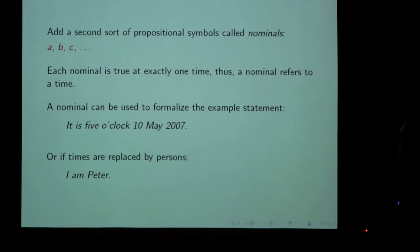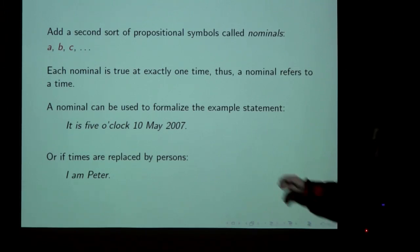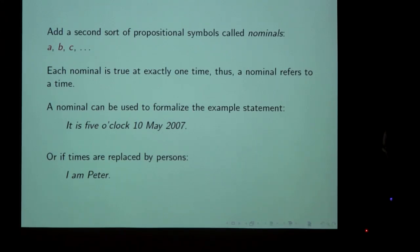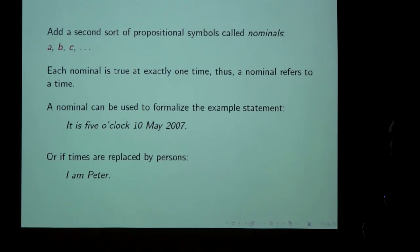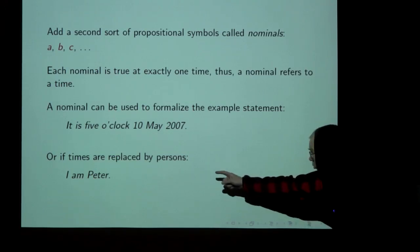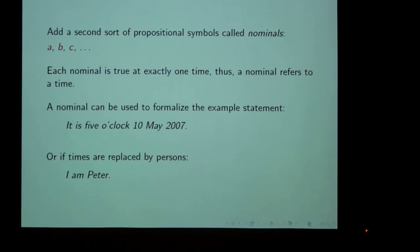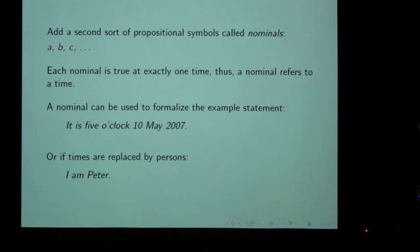Using this new piece of machinery we can formulate a statement like 'it is 5 o'clock May 10th 2007.' This statement is true at exactly one time — namely the time 5 o'clock May 10th 2007. And if we let the points in the model represent persons, we can formulate statements like 'I am Peter.' If Peter says that, it is true, but if any other person says it, it is false. So this is basically nominals or person propositions in the sense of egocentric logic.